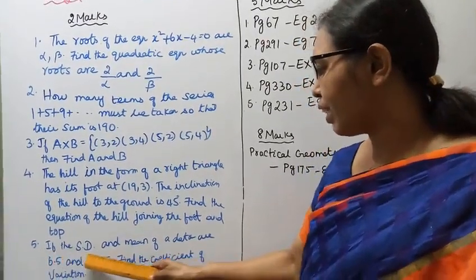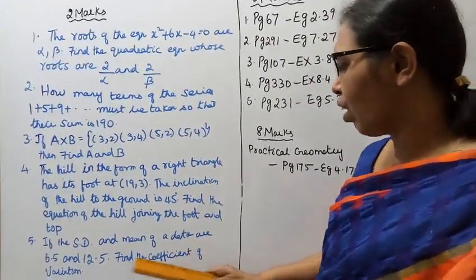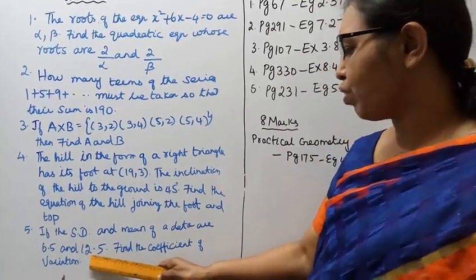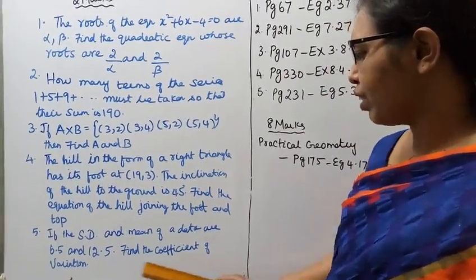Fifth, if the standard deviation and mean of a data are 6.5 and 12.5, find the coefficient of variation.